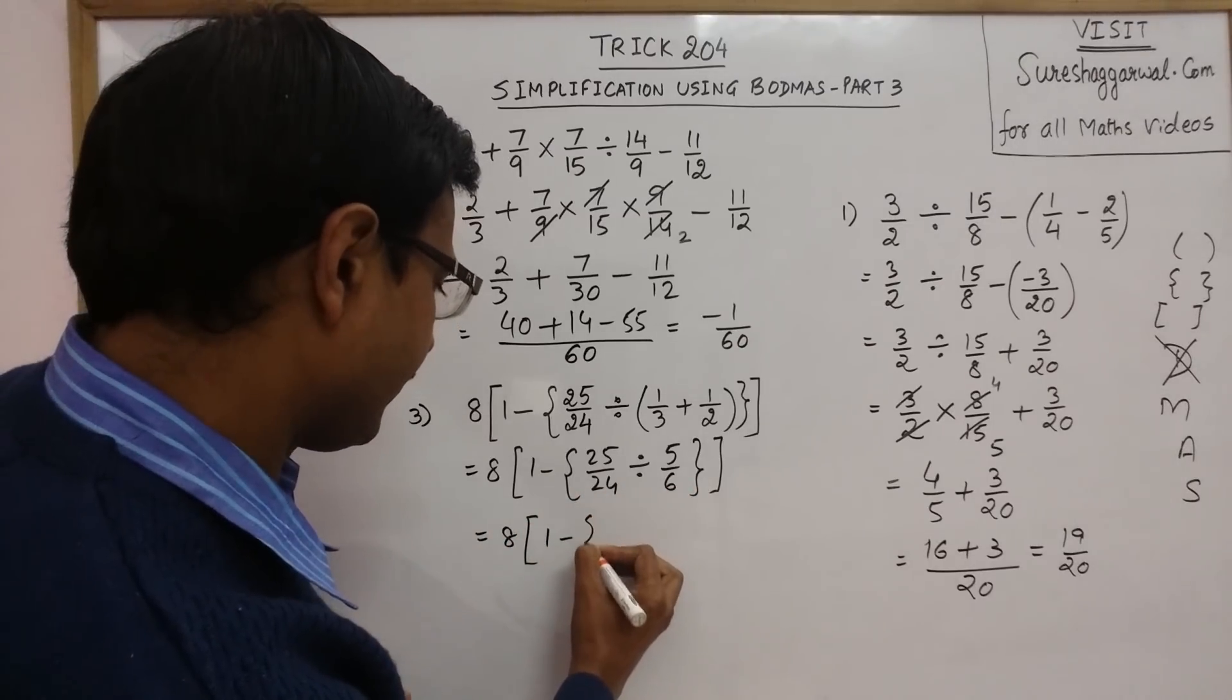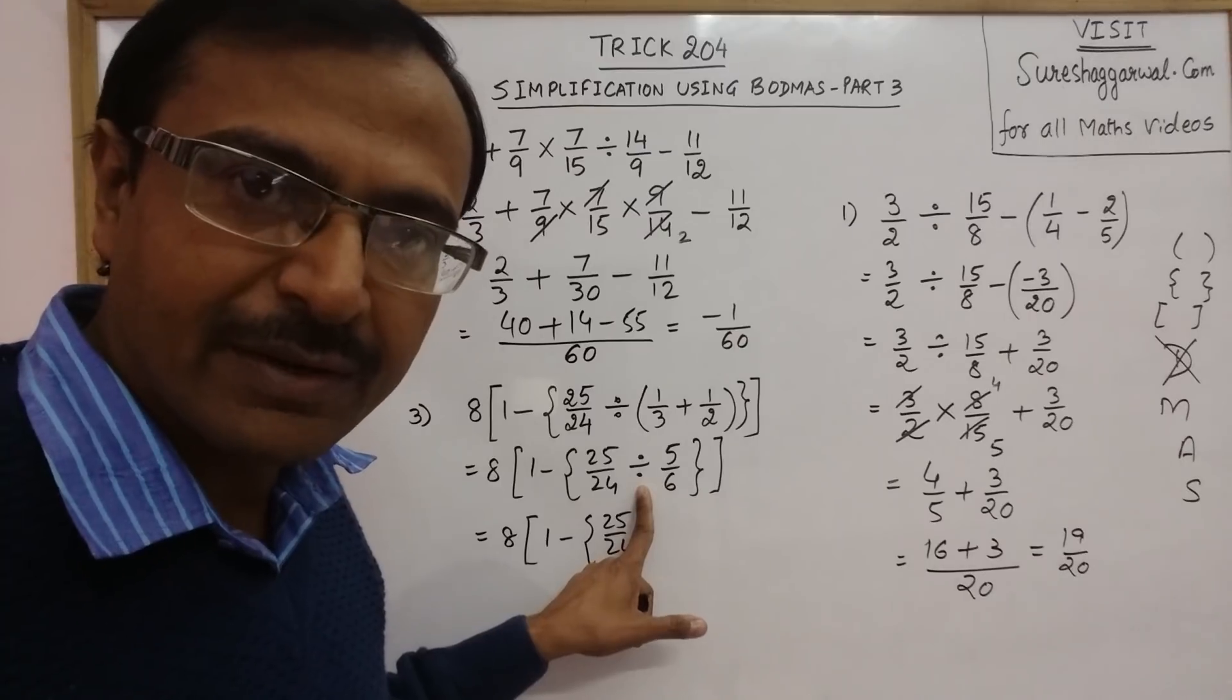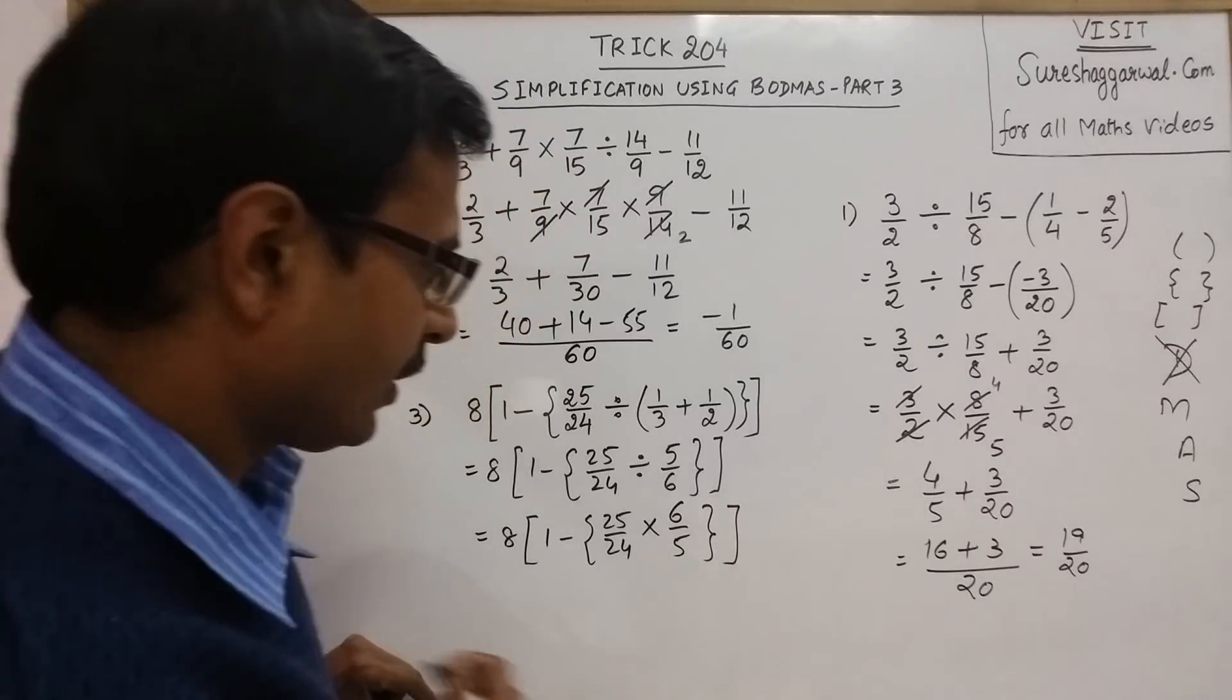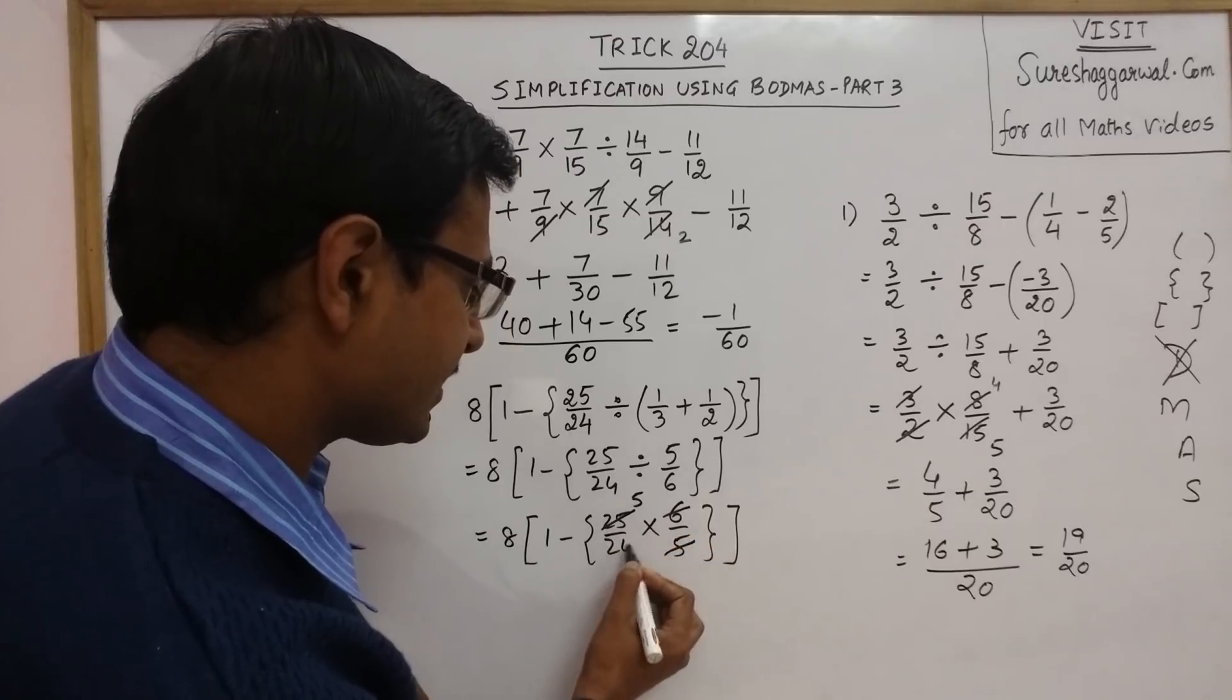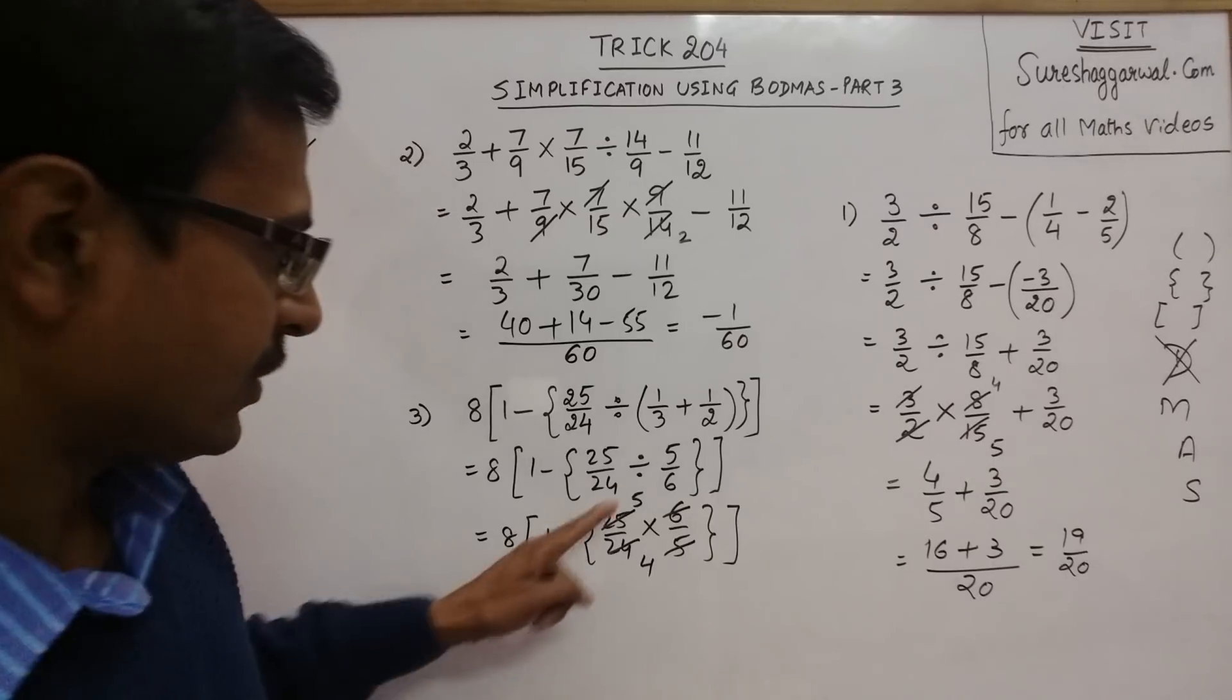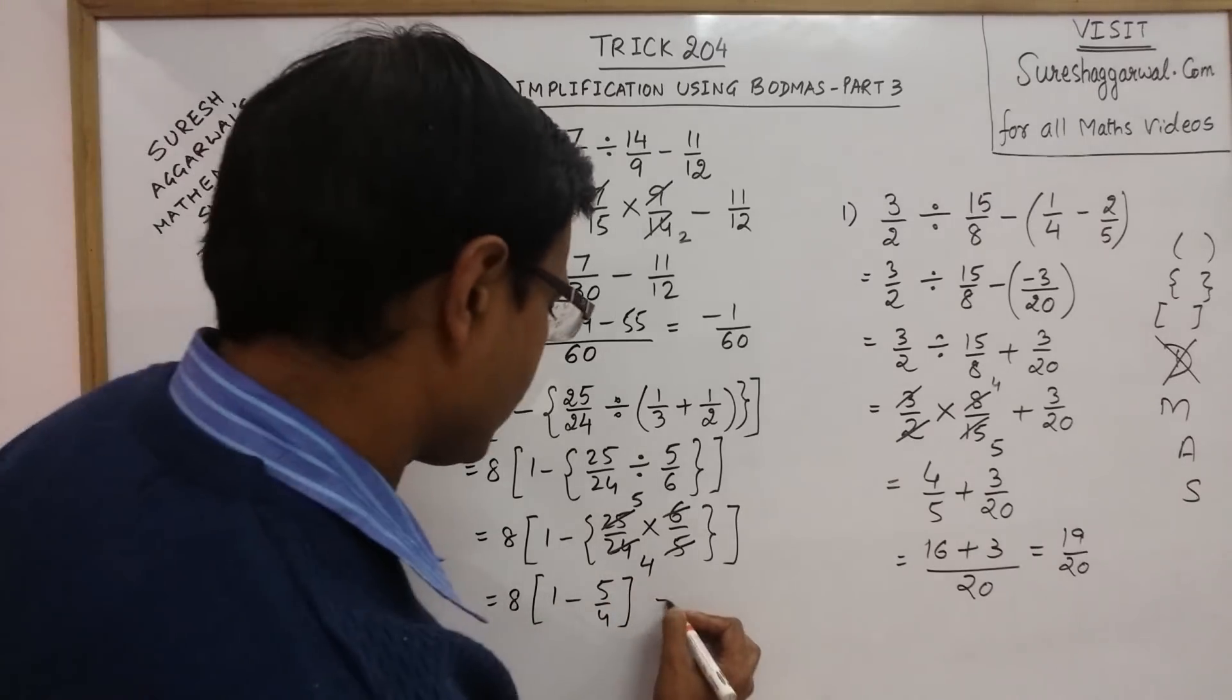Now let us try and solve the curly bracket. Here we have 25/24 and this is a division sign. When you have to divide fractions, then you have to convert the division sign into multiplication sign and take the reciprocal of the second. Now 5 cancels 25 five times and 6 cancels 24 four times. So in the next step you have 8 into 1 minus 5/4.